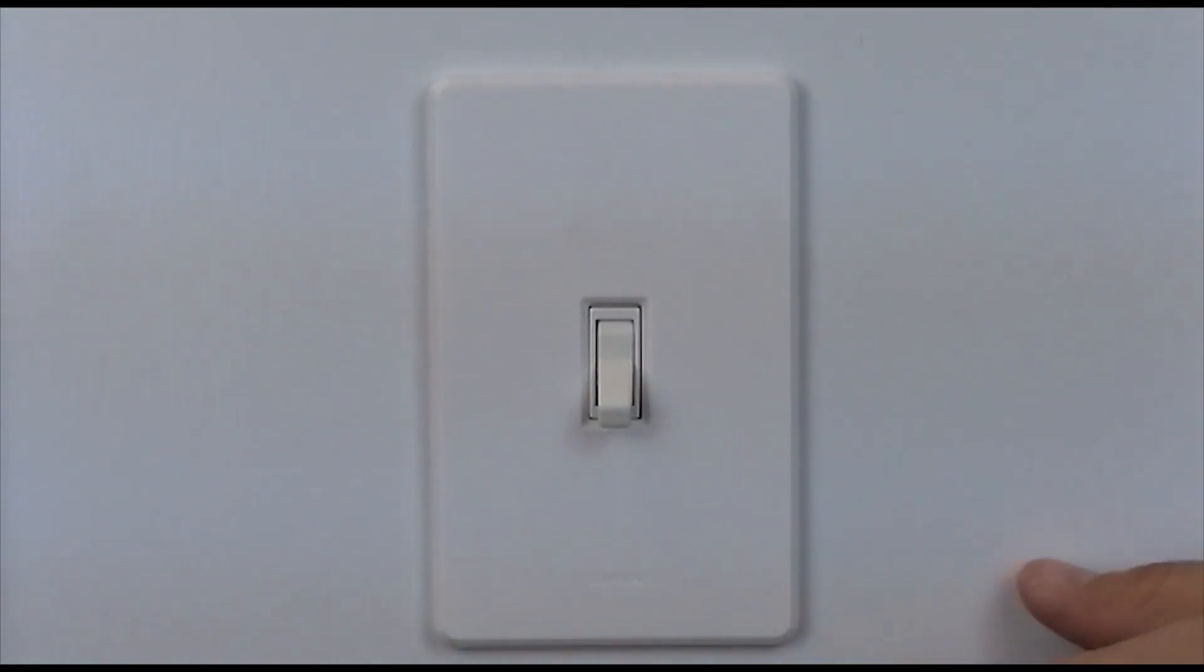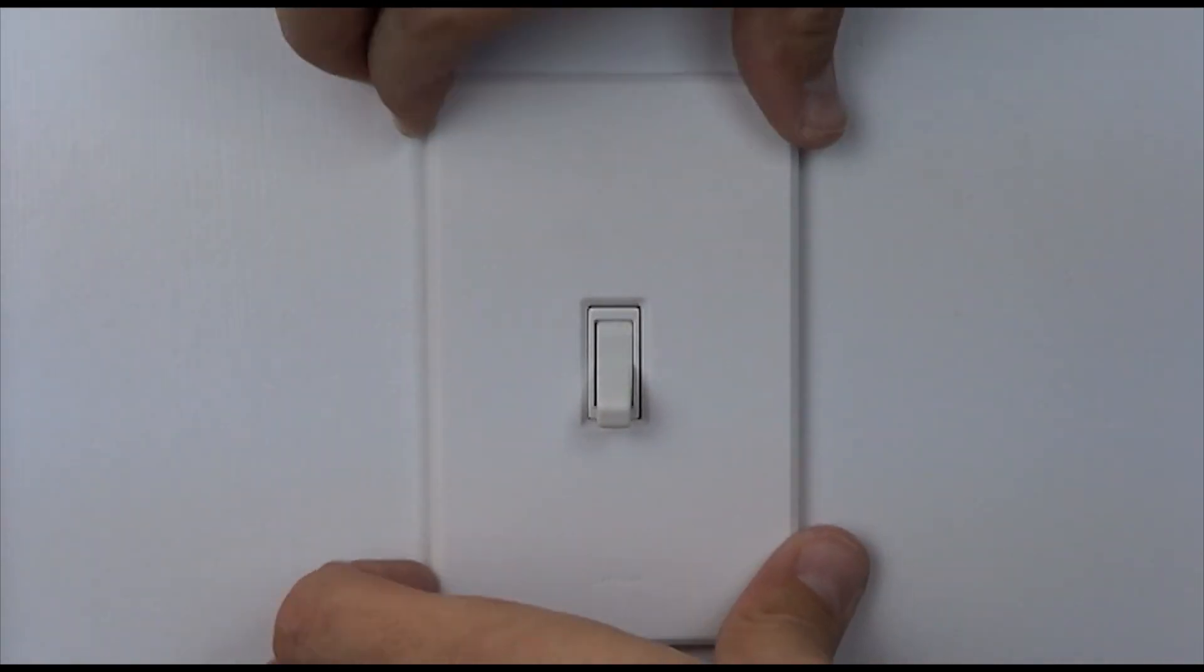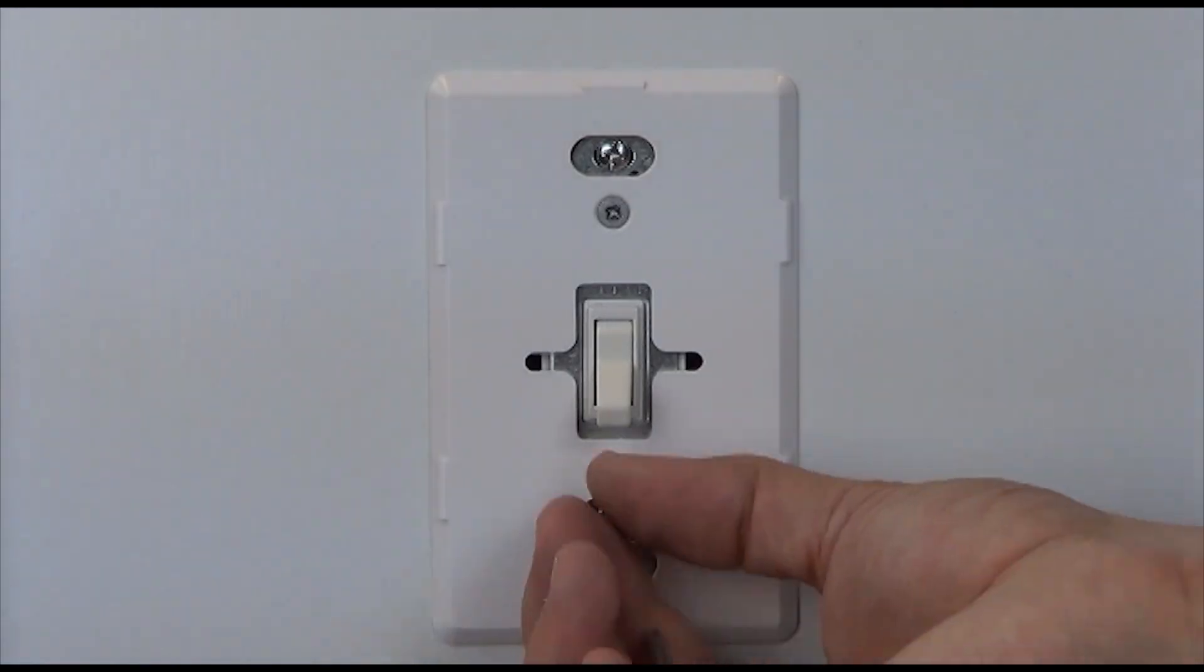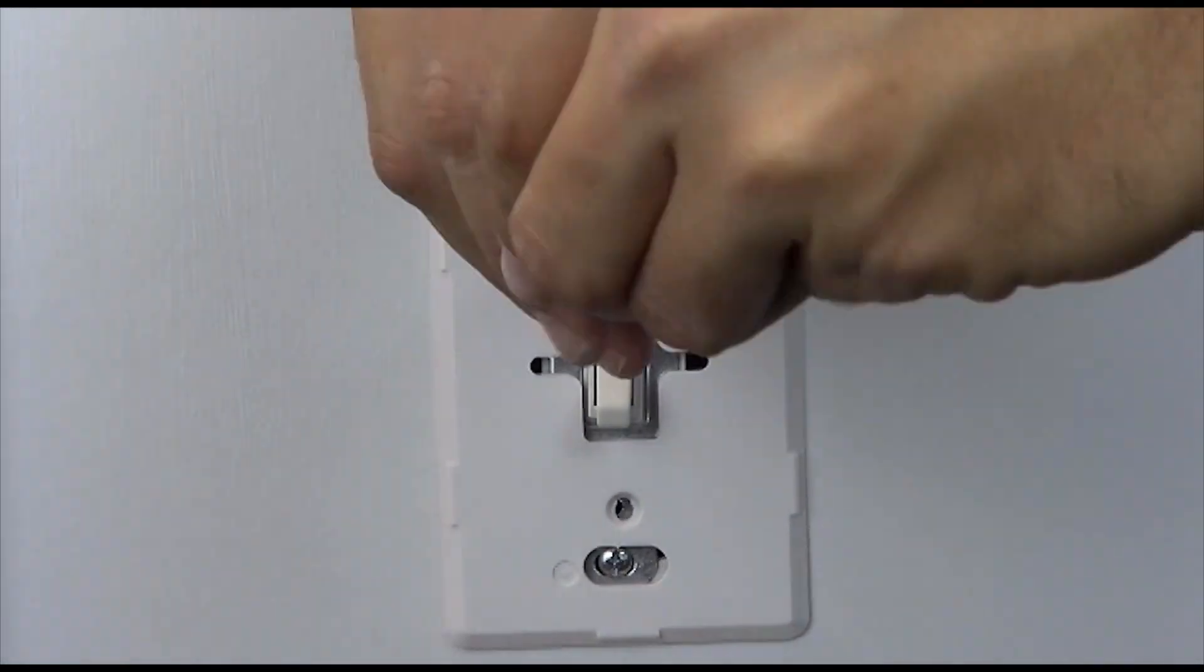We will now have to change the wiring of the other switch in the three-way. Before turning the power back on, remove the other switch from the wall box.